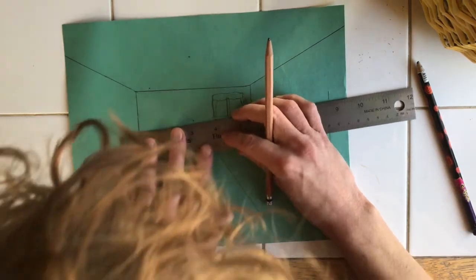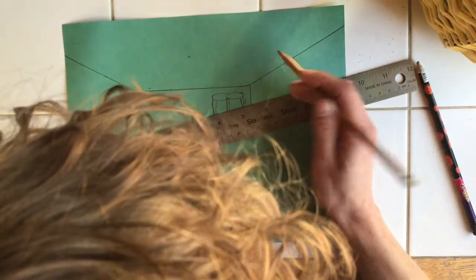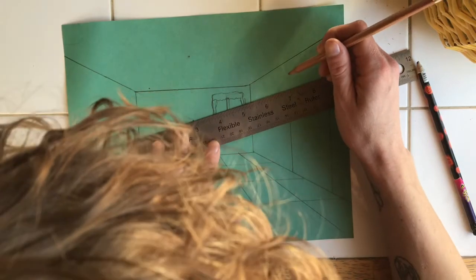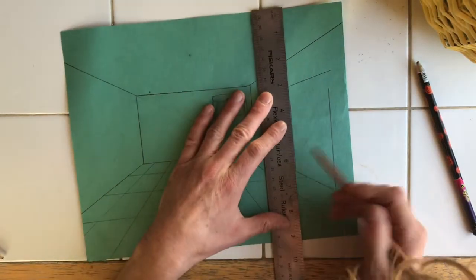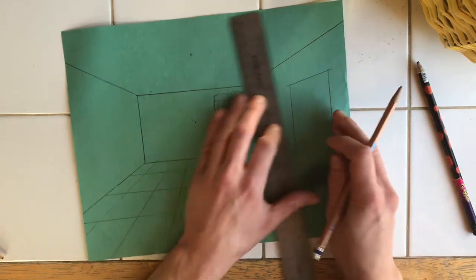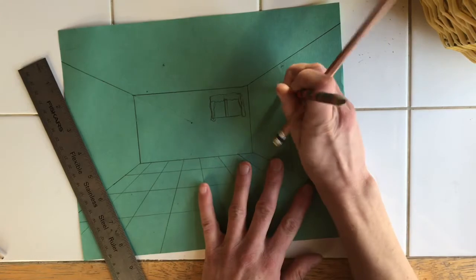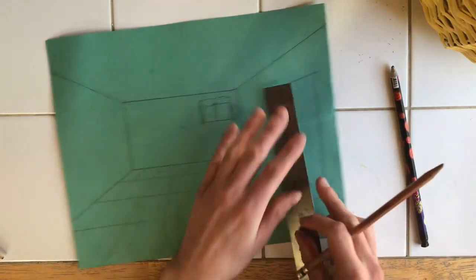Two verticals. Drawing lightly remember because you always end up erasing. Then I meet up with my vanishing points to create the top of the door. I want my door to be a little taller actually. So I'm going to go back and continue those verticals until they meet the top of the door. Get rid of my extra.